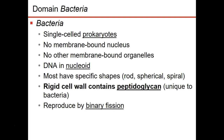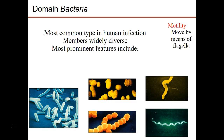Let's look at each domain. Bacteria are single-celled. They have no nucleus and no organelles. Their DNA sits in a region called the nucleoid. They have specific shapes, and I'm going to go to the next slide to show you those shapes.